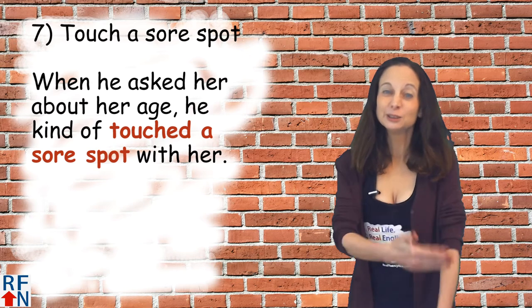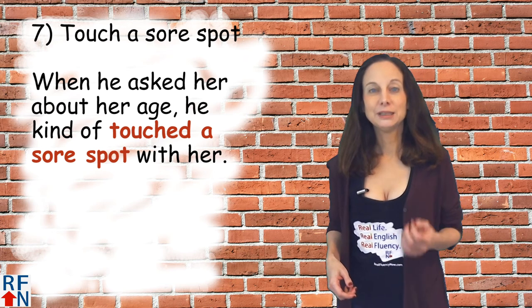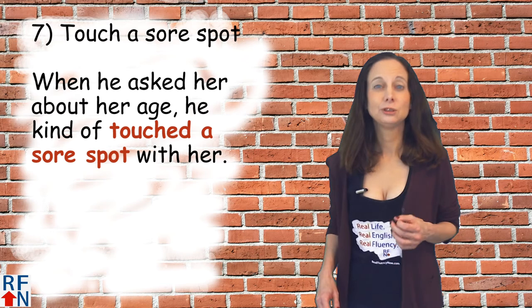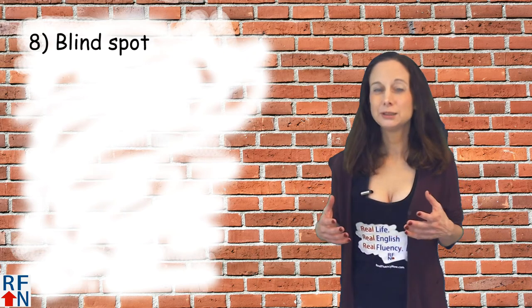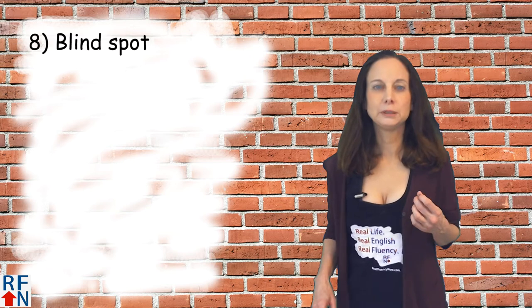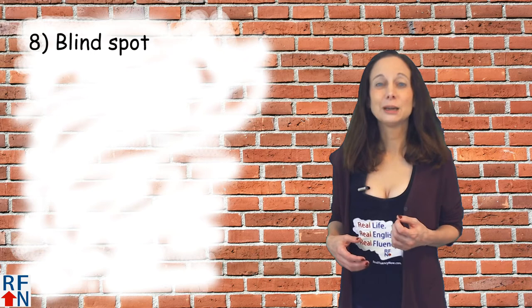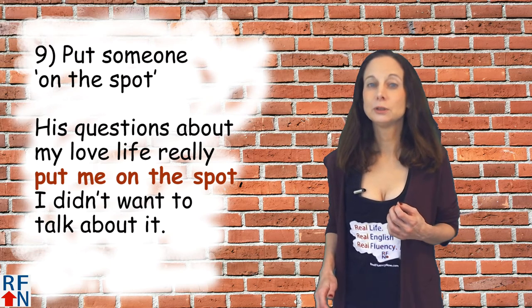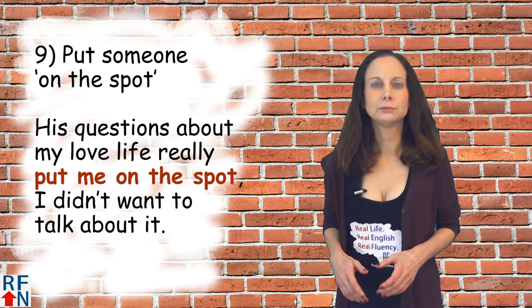But as an idiom, 'touch a sore spot' refers to when you talk about something that may upset a person, as in 'when he asked her about her age, he kind of touched a sore spot with her.' Number eight is 'blind spot' — an area you can't see. When driving, most cars have a blind spot where you can't see all the way around you, which can be very dangerous. Newer cars like Teslas have lots of cameras, so blind spots aren't such a big problem anymore. A blind spot can also mean something about your life that you aren't aware of — for example, I could have a blind spot for ways my YouTube videos could be better and just not see it. Number nine is 'to put someone on the spot,' which means to make someone feel uncomfortable, as in 'these questions about my love life really put me on the spot.'